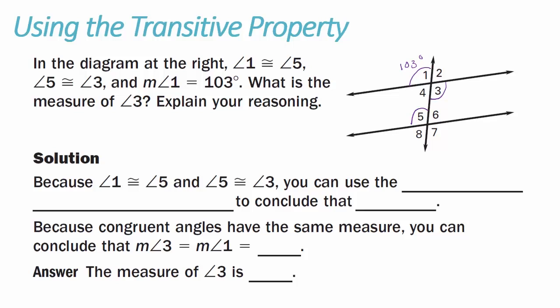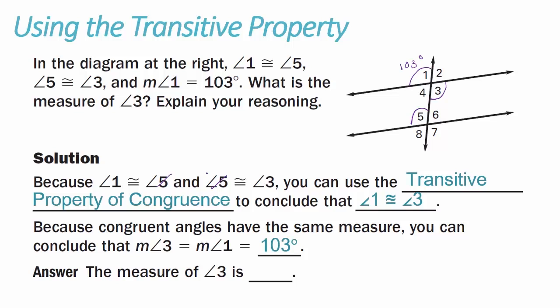Explain your reasoning. Because angle 1 is congruent to angle 5, and angle 5 is congruent to angle 3, we can get rid of the middle angle using the transitive property to conclude that angle 1 is congruent to angle 3. Because congruent angles have the same measure, the measure of angle 3 equals the measure of angle 1, which is 103 degrees.